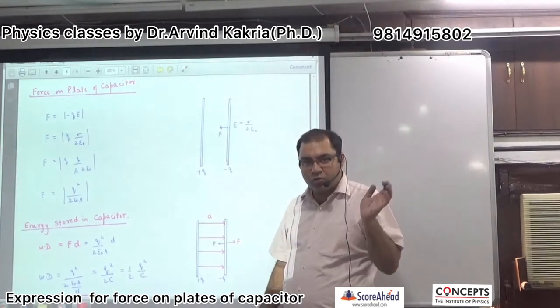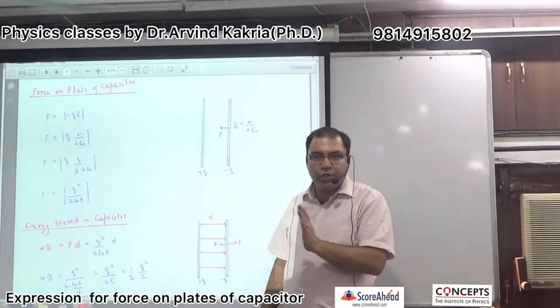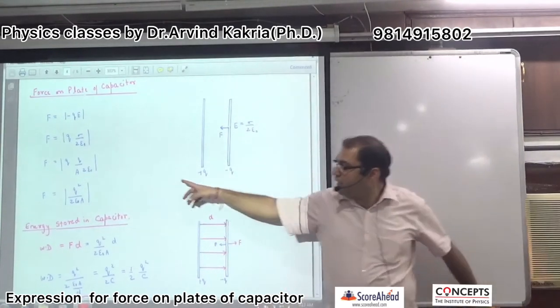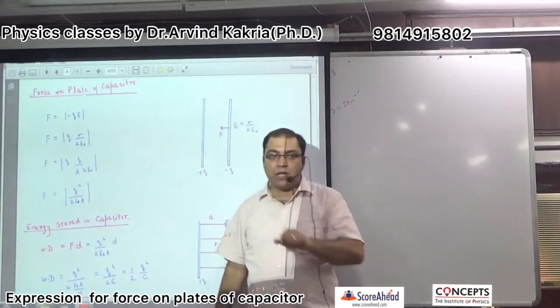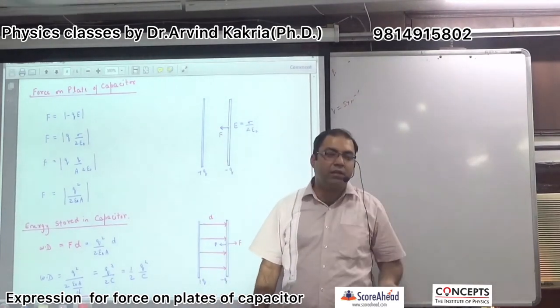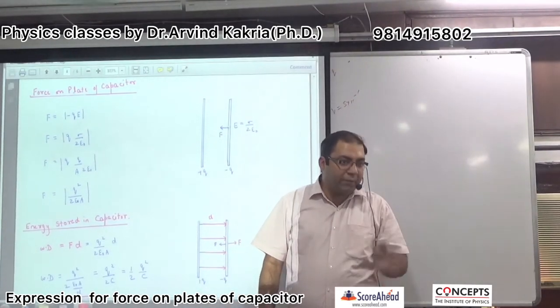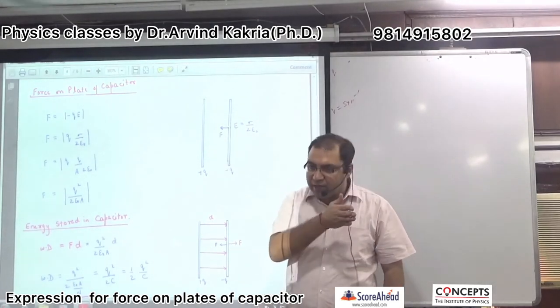Magnitude, minus sign to show attractive. So, Q into E. Now, Q into E. We can put the value of E, sigma by 2 epsilon naught. Because this plate, how much E? We had done in flux chapter. It was the last application. It was a sheet example.